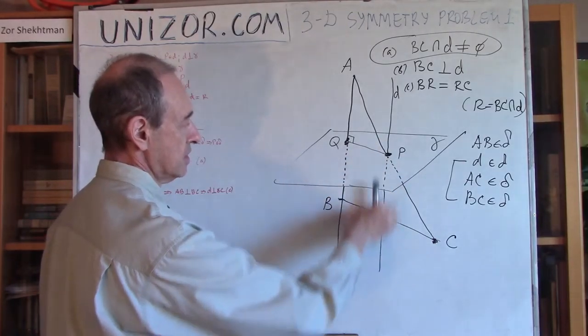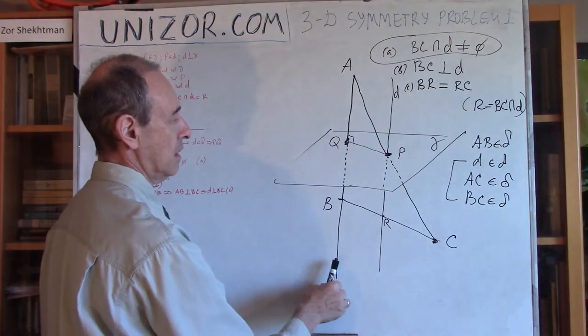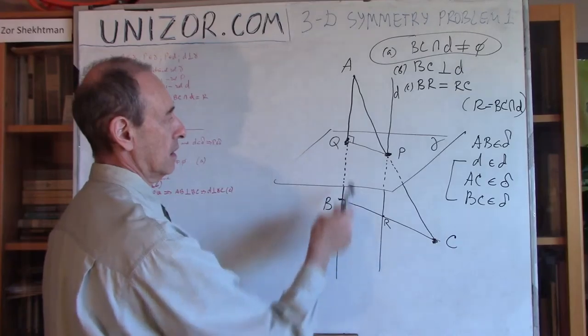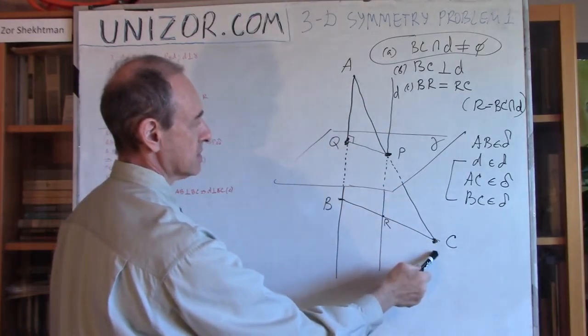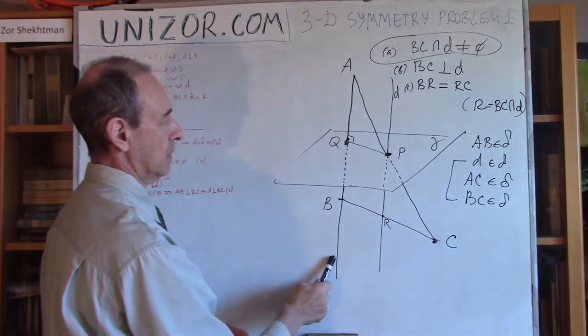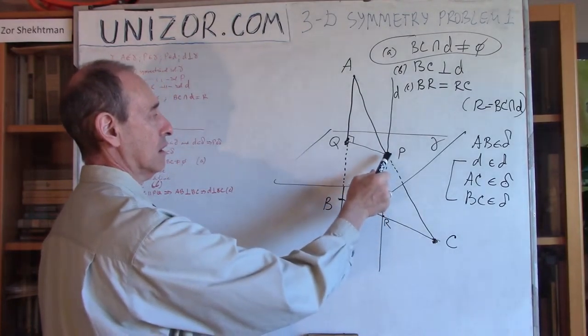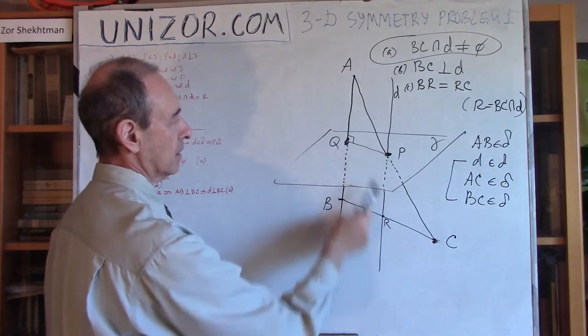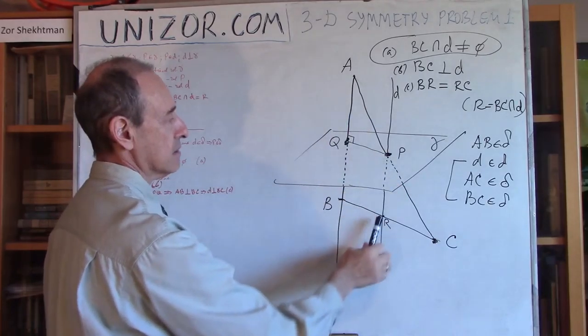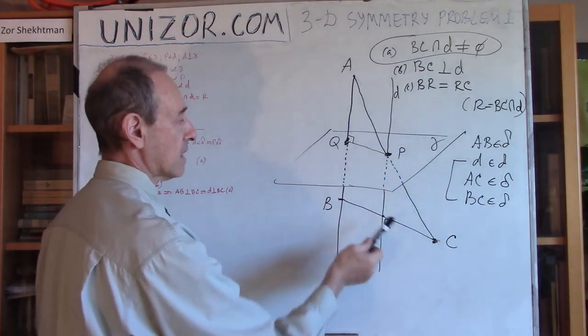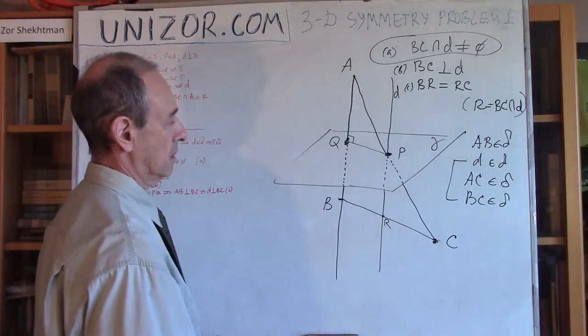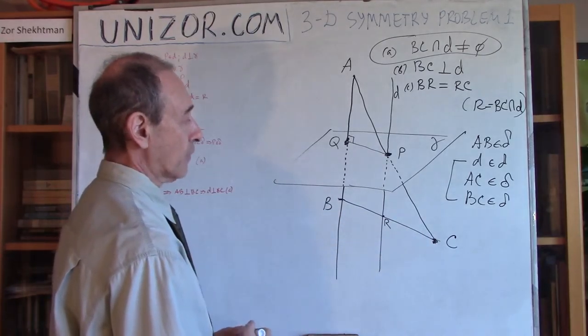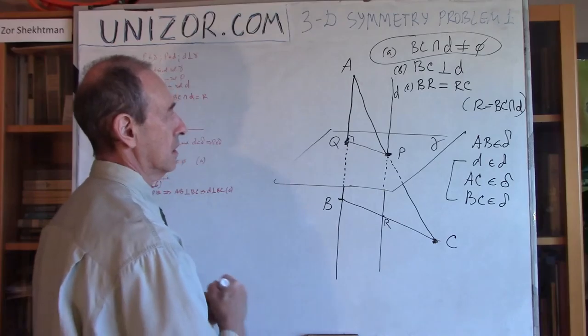Now we know that D is parallel to AB. So what is actually PR? PR is also a midline, because P is the middle of this, and PR is parallel to AB. And if you have a triangle, and you have a line which intersects a side at its middle and is parallel to the base - in this case AB is the base - then this line is a midline, and it cuts in half the opposite side of the triangle, which is BC. From which follows that BR is equal to RC. That's this condition proven.